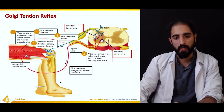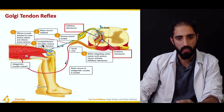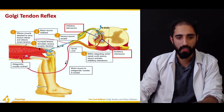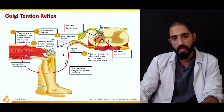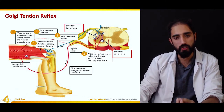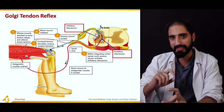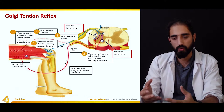For example, if there is excessive contraction of the quadriceps, as shown in this figure, this increased tension in the quadriceps results in activation of the Golgi tendon organ, because it senses muscle tone or the change in muscle tone or tension.